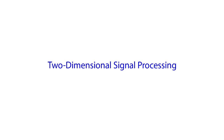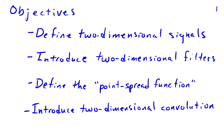Two-dimensional signal processing extends many of the same ideas used in one-dimensional signal processing. In this video, we're going to introduce notation for two-dimensional signals, introduce the idea of two-dimensional filters, define something called the point spread function — which is very similar to the impulse response in one dimension — and then introduce the idea of two-dimensional convolution.